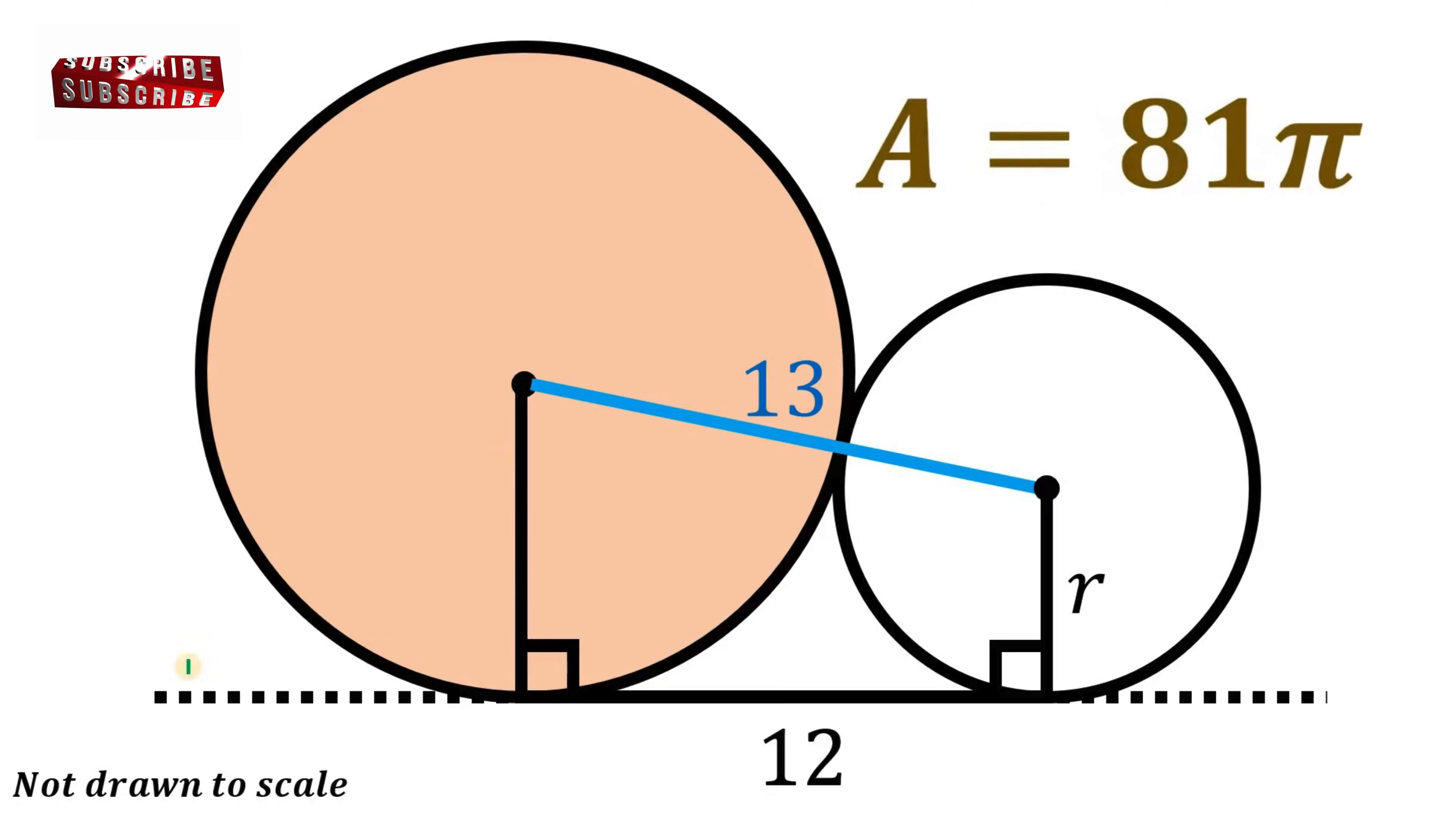Therefore, given this figure which is not drawn to scale, the area of this big circle is equivalent to 81π square units.